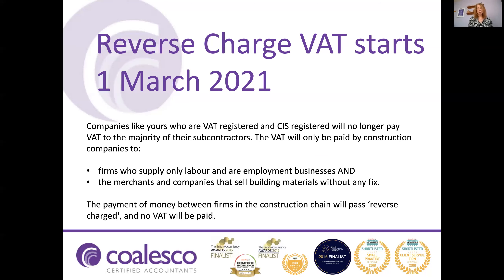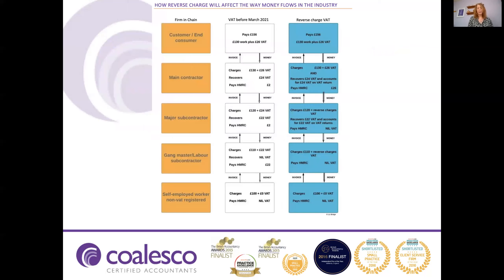We have a diagram which shows how the reverse charge will affect the way that money flows in the industry. Looking at the white column on the slide, we can see VAT before the 1st of March 2021 — the model we are all familiar with. Starting at the bottom of the chain with a self-employed worker who is non-VAT registered, the worker raises his invoice for £100 plus no VAT.